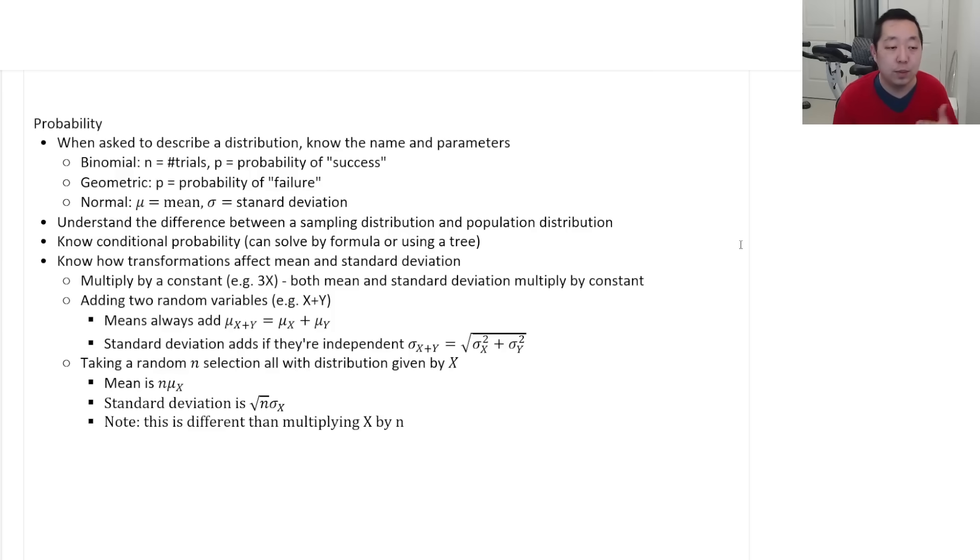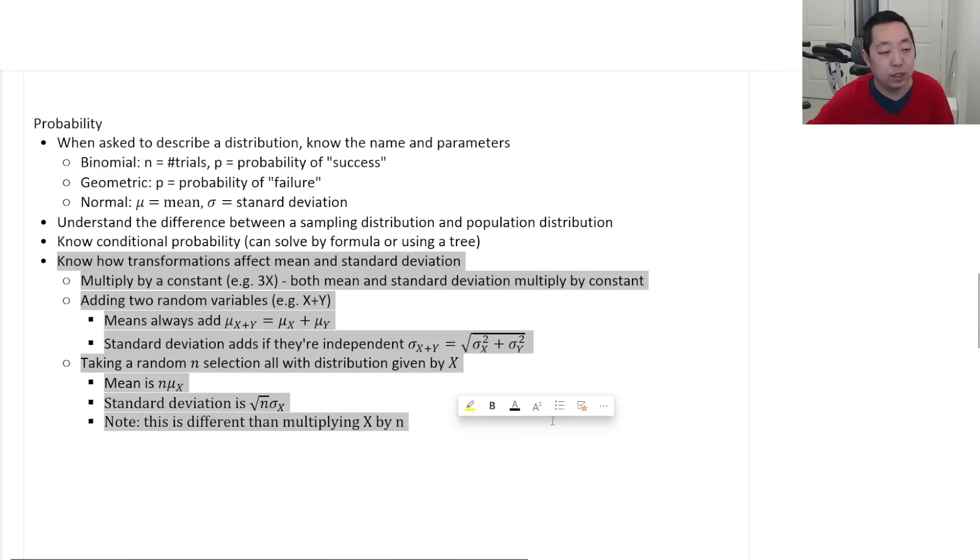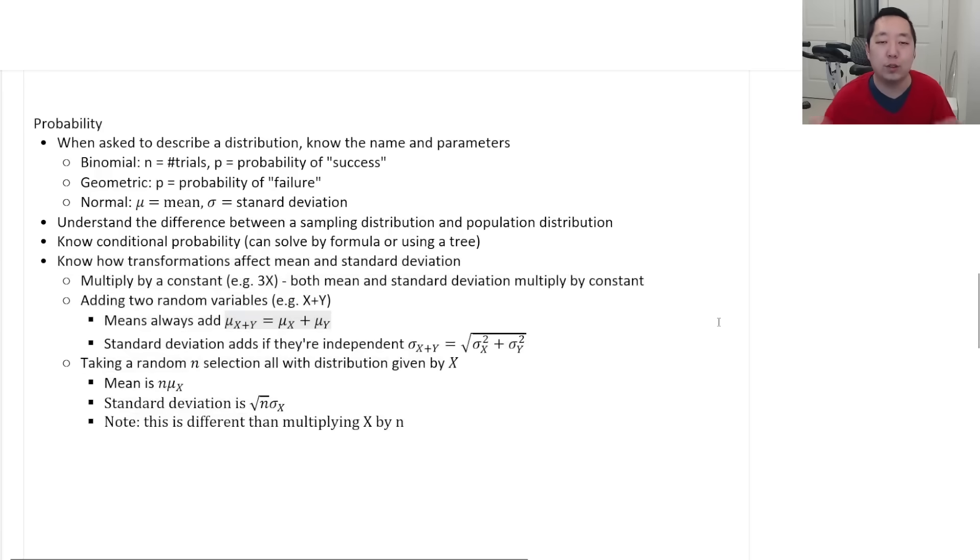Make sure you understand the difference between a sampling distribution and a population distribution, like a sample mean or something like that. Make sure you know conditional probability, right? That's if something is conditioned on an event and what that means and what independence ultimately means in relation to conditional probability. And then here I want to hit up because I know this is an area that a lot of students struggle with, so I want to focus on this. Know how the different transformations can affect the mean and standard deviation.